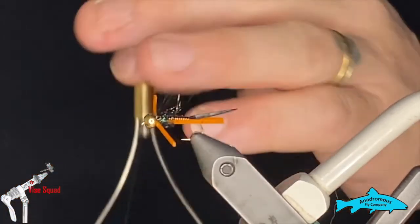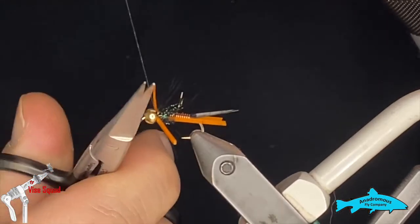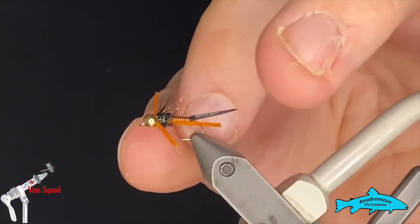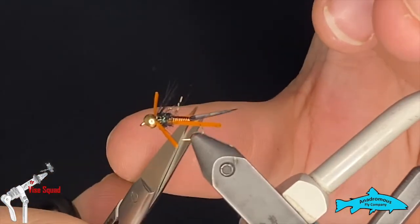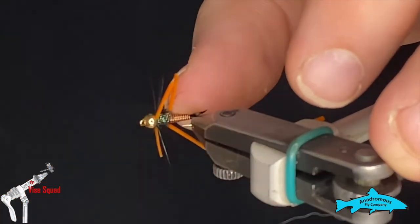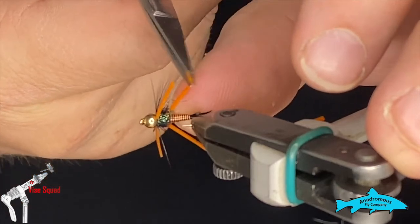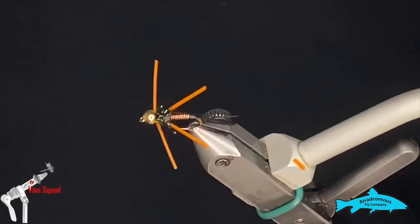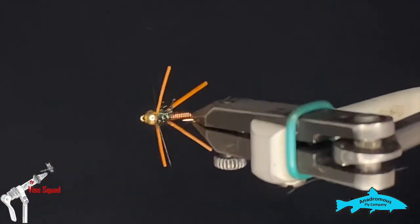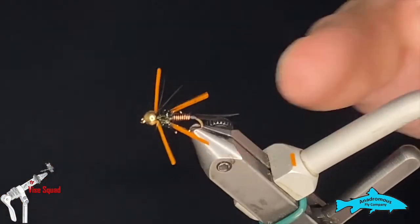One last thing will be just to grab our scissors and we'll cut those back legs to length, which again is personal preference. We'll make them about the same size as the front ones. It should be okay as long as they're close. So here's the Montana Prince Nymph.